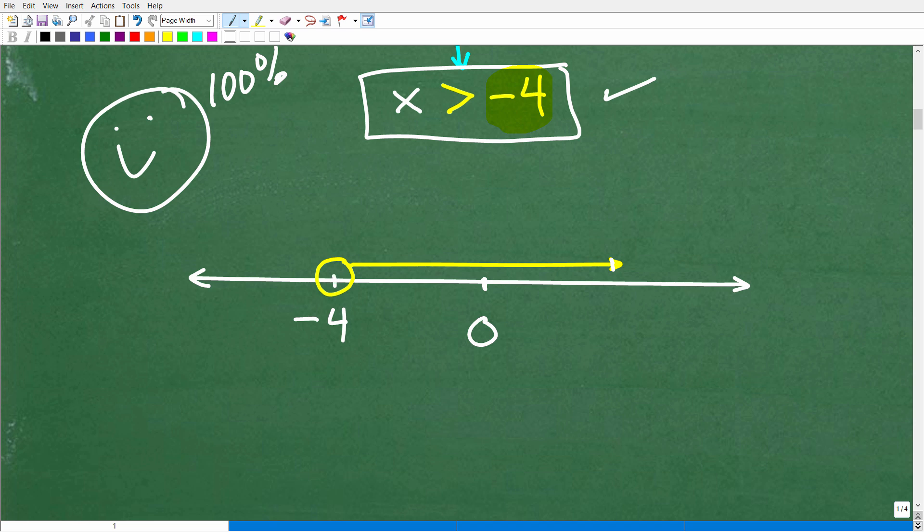So, here is negative 4. We'll call that right there. And then, draw an open circle around negative 4.